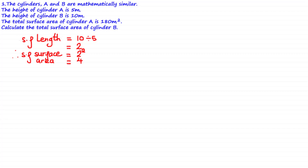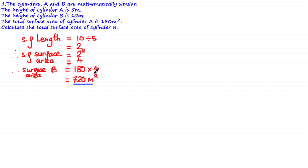All other dimensions of cylinder B, such as the surface area and volume, would be greater than cylinder A. So to find the total surface area of cylinder B, we multiply the surface area of A — 180 meters squared — by the scale factor of surface area, which is 4. The surface area of B is equal to 720 meters squared.